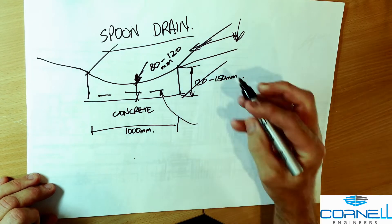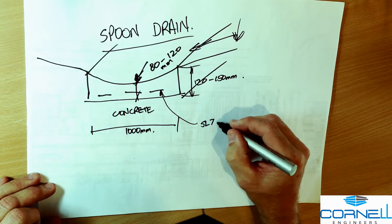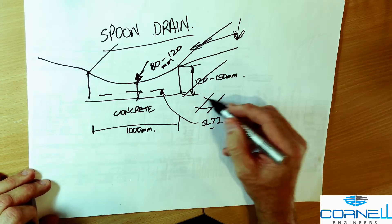The reinforcement we use is fairly light reinforcement. In Australia we'd probably use an SL 72 which is seven millimeter bars at 200 millimeter centers in both directions.